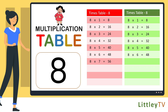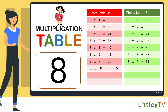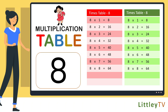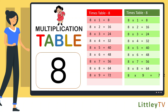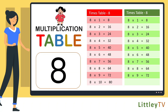8 sevens are 56, 8 eights are 64, 8 nines are 72, 8 tens are 80.